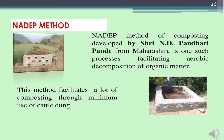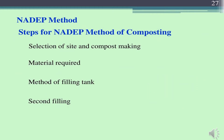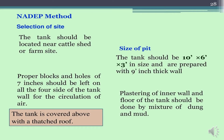The first is the NADEP method, one of the composting methods that facilitates aerobic decomposition of organic matter. This method facilitates composting through minimum use of cattle dung. For site selection, the tank should be located near a cattle shed or farm site. The size of the pit should be 10 feet long, 6 feet wide and 3 feet deep. It should be well prepared with a 9-inch thick wall, and holes of 7 inches should be left on all 4 sides of the tank wall for circulation of air.